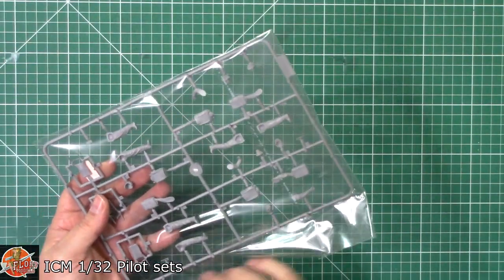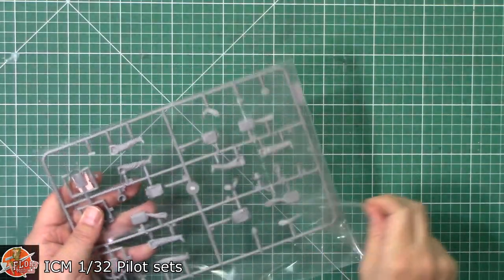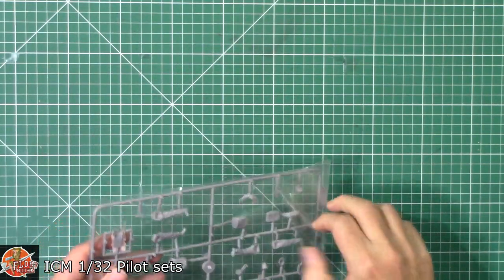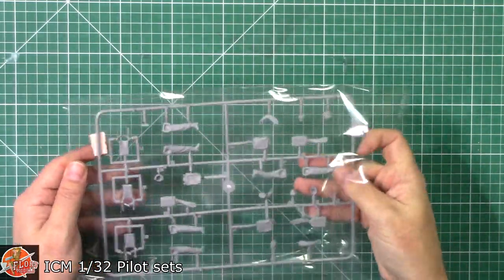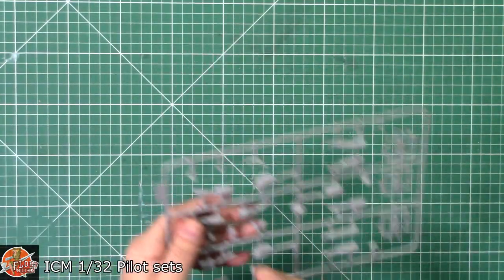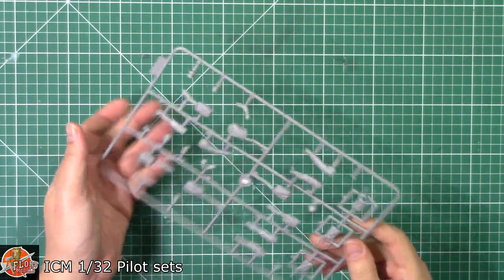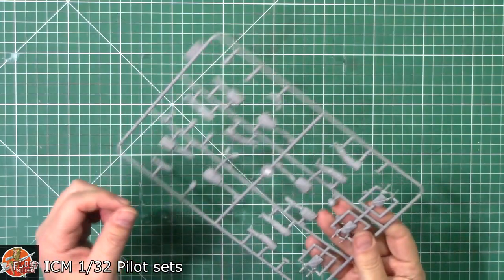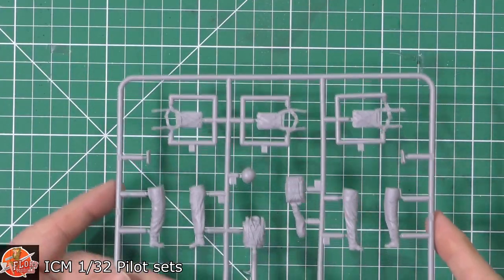But this is the interesting part. So down in here, we've got a sealed bag with one sprue. And that is the nice thing with these. That's where we're going to start. Let's start up here.